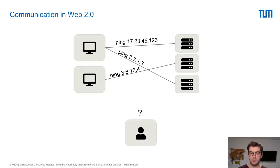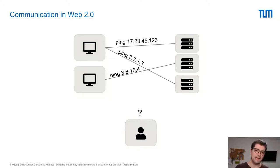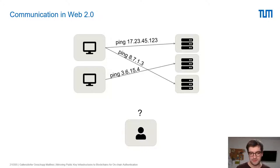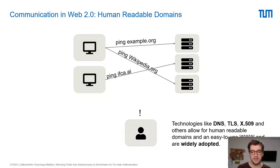Communication in Web 2.0 or the Internet itself is quite unknown to the user. Computers communicate via IP addresses with the IPv4 protocol, and these numbers are not really human readable. Some may know the domain name server for Google 4.4.4.4, but users don't really know which IP addresses belong to the services they want to communicate with.